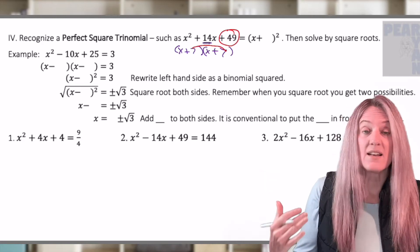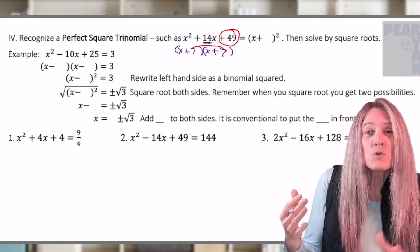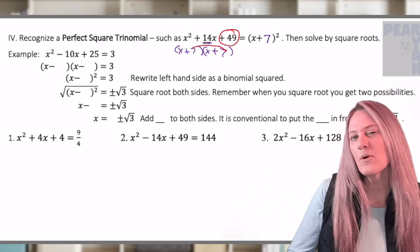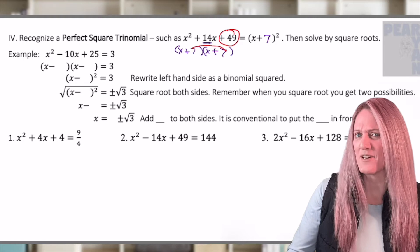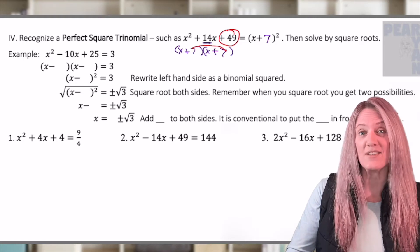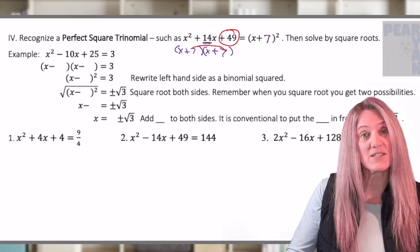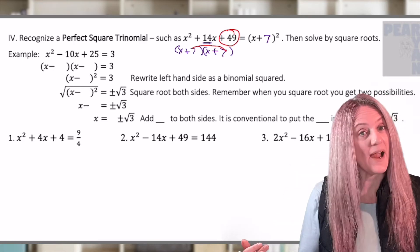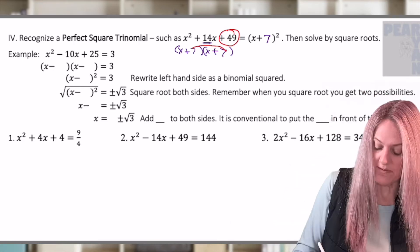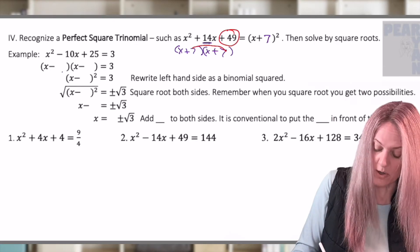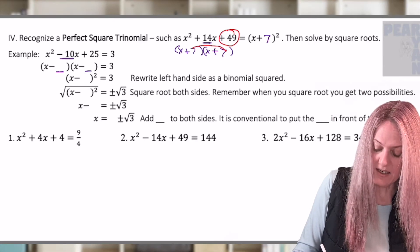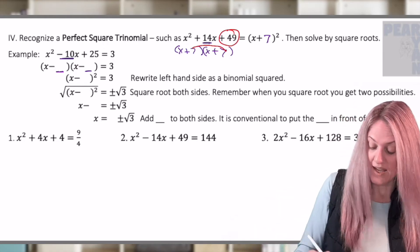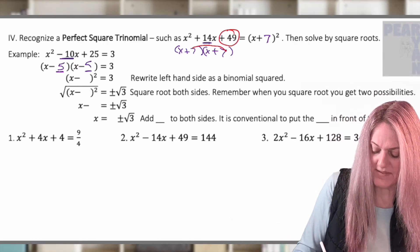So instead of writing x plus seven times x plus seven, it's way easier to just say x plus seven quantity squared. And of course, we're leading you into the idea that if it's x plus seven quantity squared, that's a lot like solving by square roots last lesson. Let's look at a full example. We need to rewrite it as a binomial squared. Once again, what do I want to go in these two spots? I need something plus itself that adds to 10. And of course, that's just going to be a five and a five.